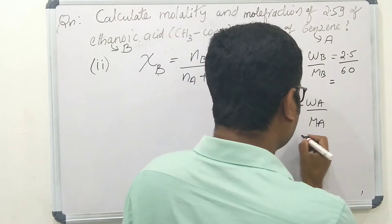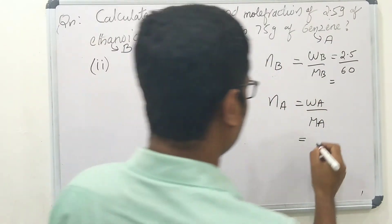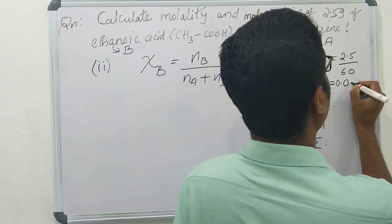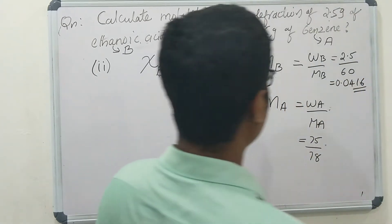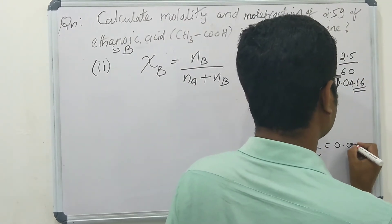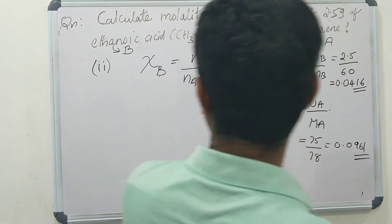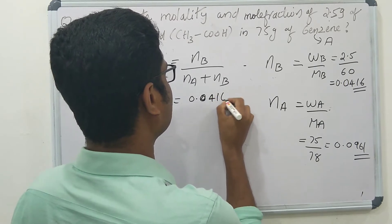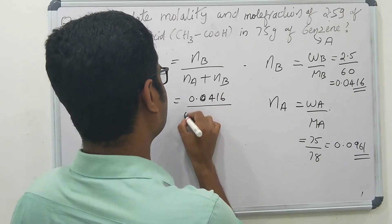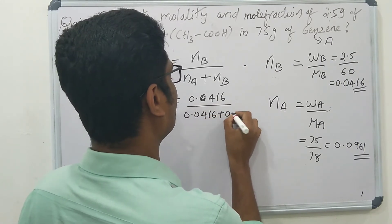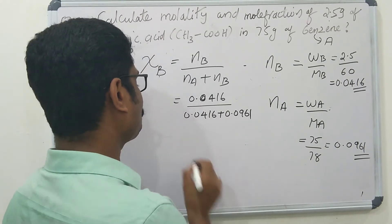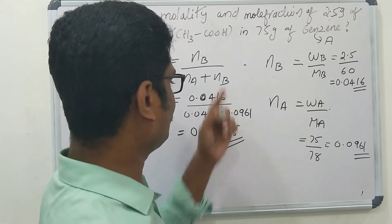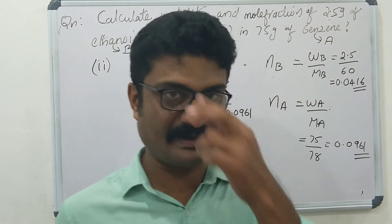Number of moles of benzene: 75 divided by molar mass of benzene (78), giving 0.0961. Number of moles of ethanoic acid: 2.5/60 = 0.0416. So mole fraction of ethanoic acid is 0.0416 / (0.0961 + 0.0416), and the answer is 0.0415.